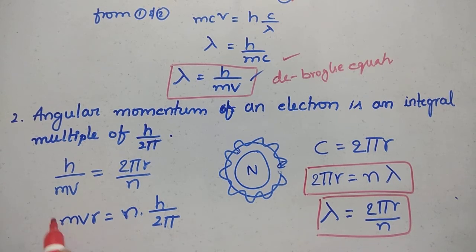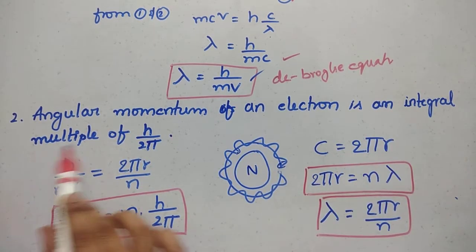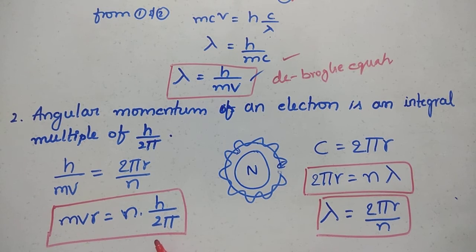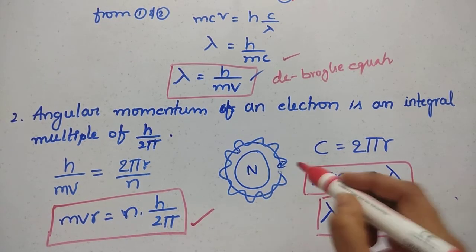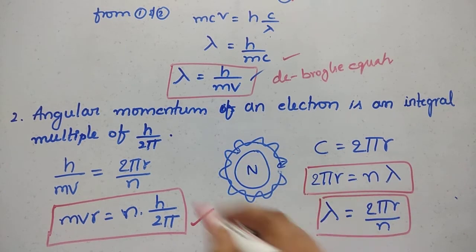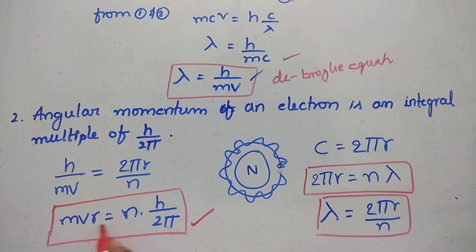This is the angular momentum of the electron. The angular momentum of an electron is equal to integral multiples of h by 2 pi. The angular momentum of an electron is equal to n into h by 2 pi. This is the relation.